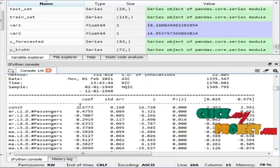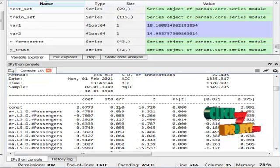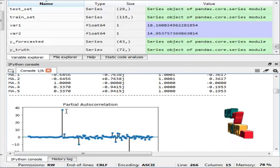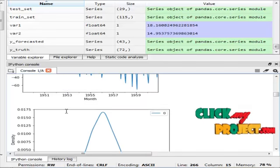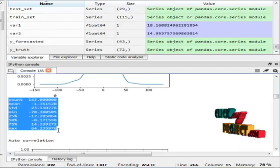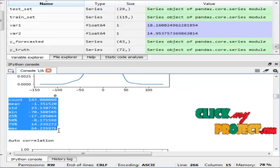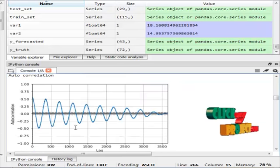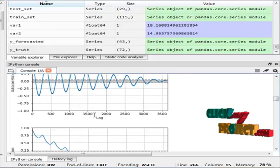This is the ARIMA model to find coefficient values and standard error values. This is the partial autocorrelation graph. These are residual values of air passenger in Melbourne dataset. This is the autocorrelation visualization.